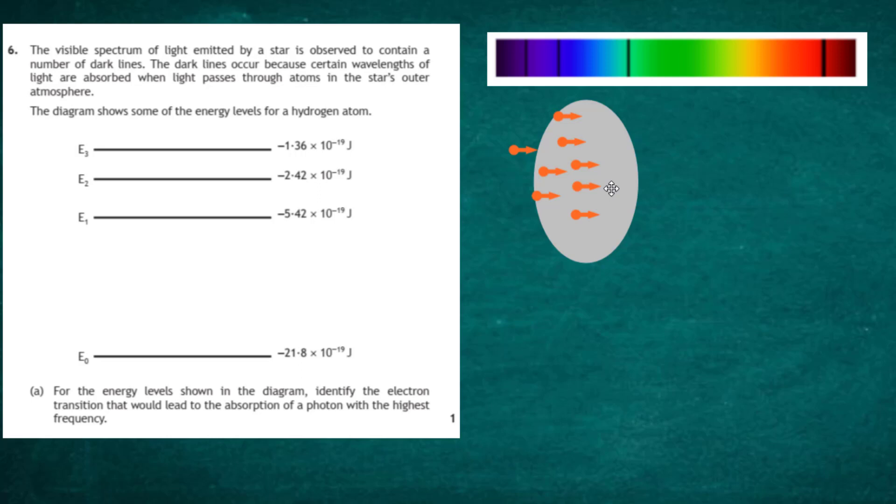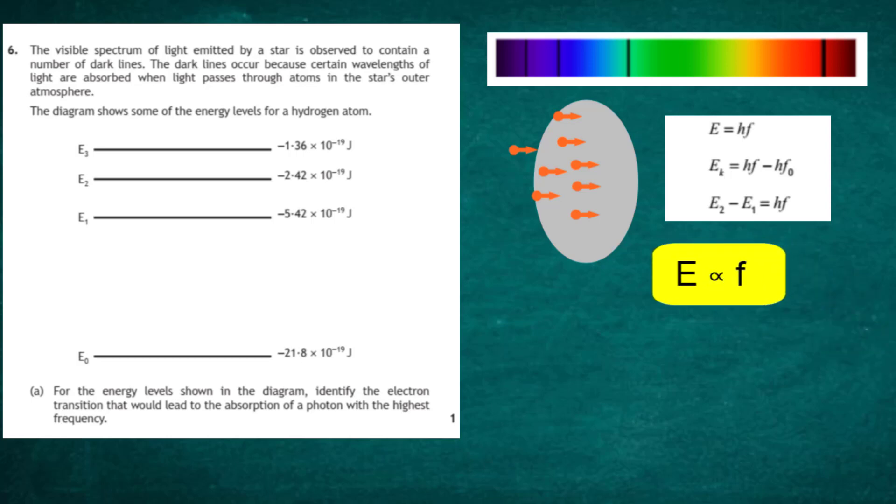Now for one mark, it says for the energy levels shown in the diagram, identify the electron transition that would lead to the absorption of a photon with the highest frequency. Well, we go to our relationship sheet, we can see that the energy of the photon E is equal to hf, h being Planck's constant. And therefore what that means is that we can say that the energy of the photon is directly proportional to the frequency.